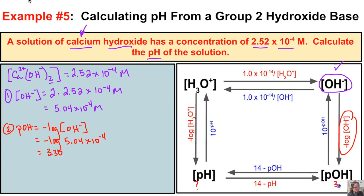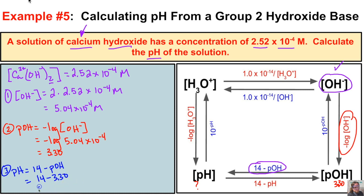Our pOH is 3.30, but we want the pH, so we take this a step further. In step three, we take 14 minus the pOH: 14 − 3.30 = 10.70. So the pH of this calcium hydroxide solution is 10.70, and that is our final answer.